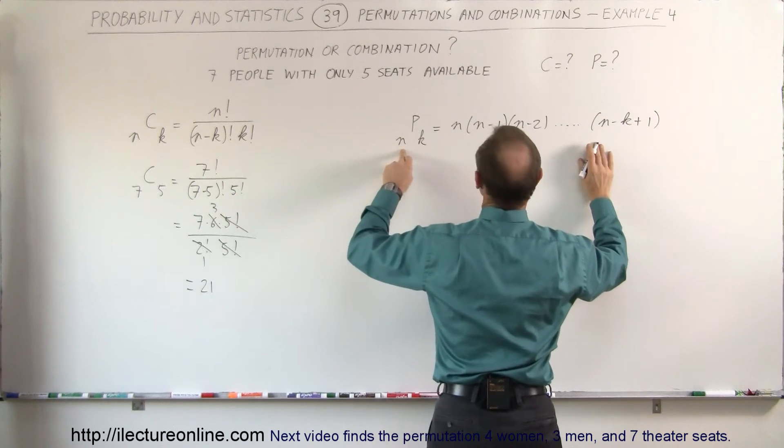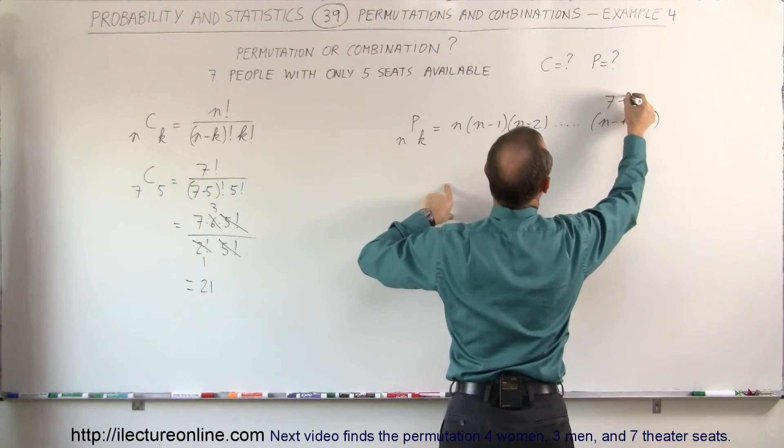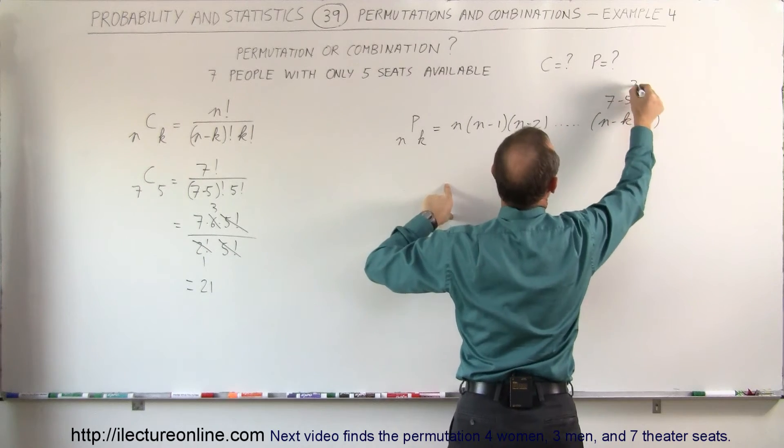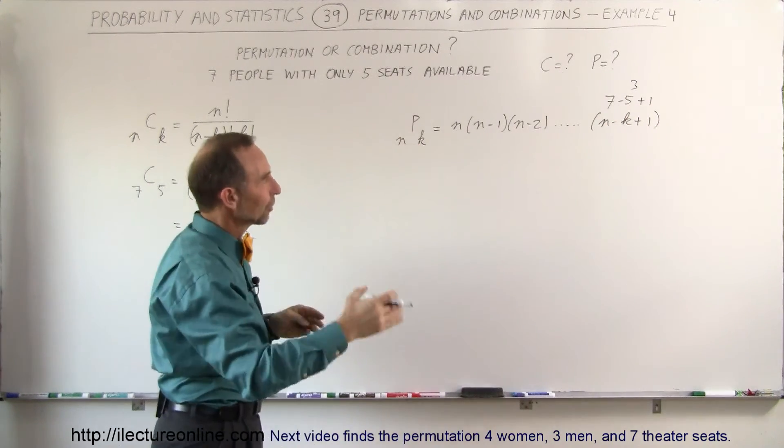In our example, since n is equal to 7 and k is equal to 5, we have 7 minus 5 plus 1 that would be 2 plus 1 which is 3. So here we're going to multiply 7 times 6 times 5 times 4 times 3.